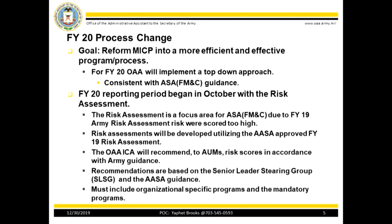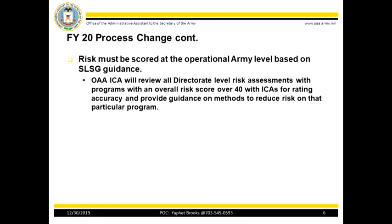This process has been approved by Mr. Averill, and it has been included in the Senior Level Steering Group Senior Assessment Team Quarter 2 FY19 briefing. Further, it is consistent with the FY20 ASA-FMMC guidance. Feedback received in FY19 was that Army organizations were scoring risk too high for a lot of Army programs, to include administrative programs. Risk should be scored at the Army operational level. Any program with an overall risk over 40 will be re-evaluated, and a plan will be developed to lower the risk.